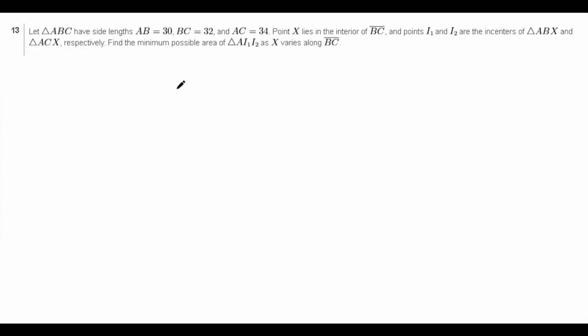Let ABC have side lengths AB equals 30, BC equals 32, and AC equals 34. Point X lies on the interior of BC, and points I1 and I2 are the in-centers of ABX and ACX, respectively. Find the minimum possible area of I1, I2, as X varies along BC.